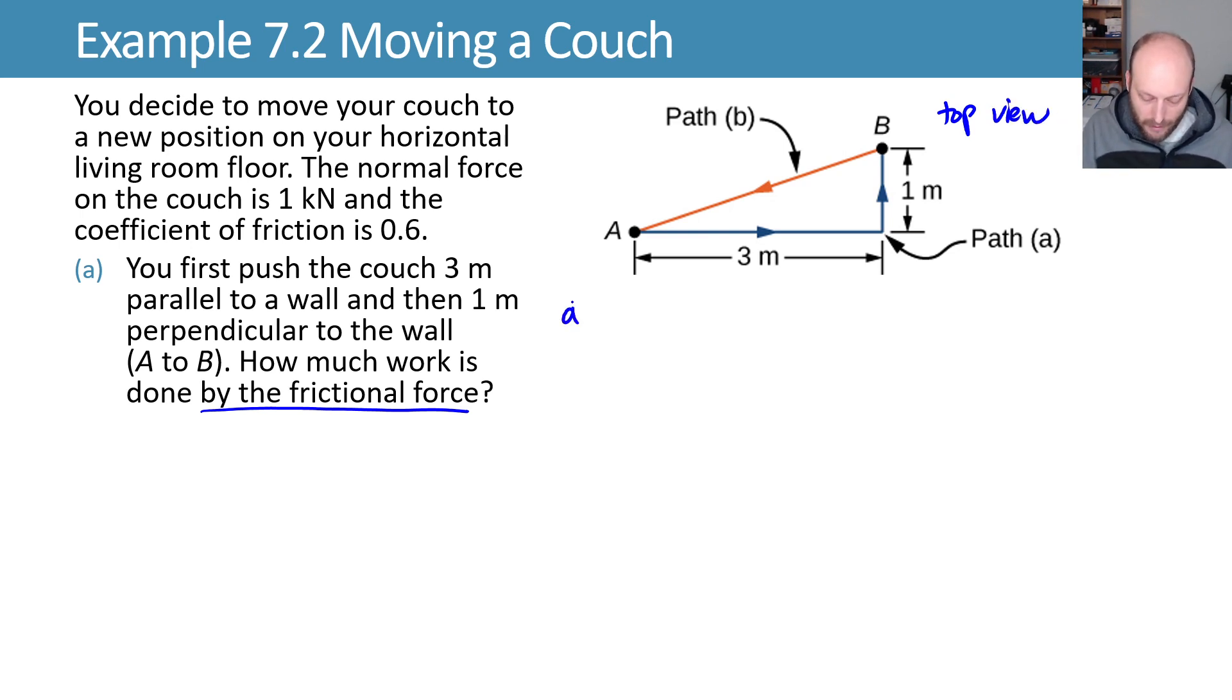To do this, we will say that our work done by friction as we move from A to B is equal to the force of friction, which will be kinetic friction because we're sliding, times the distance we move times the cosine of the angle between the force and the displacement. Here, since the force of friction is always opposing the direction of motion, this will always be 180 degrees.